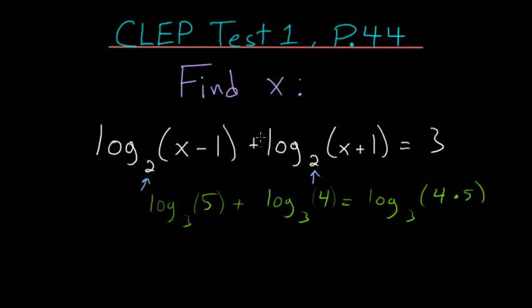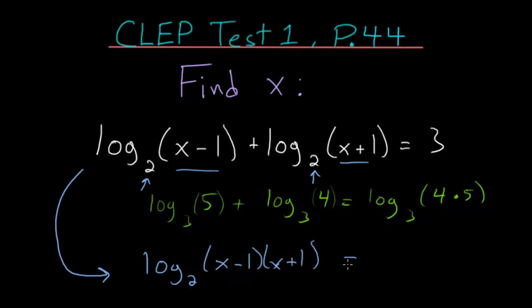So we can combine these into one logarithm of base 2, where the insides of each of these logarithms are multiplied together. So x minus 1, x plus 1, and all of this is equal to 3.